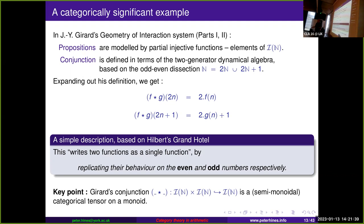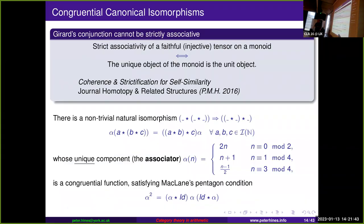There's something we need to take into consideration: we can't have a strictly associative tensor on a monoid, at least not without forcing it to collapse to the endomorphism monoid of a unit object, which would force the monoid to be abelian and the tensor to coincide with composition. So there must be a non-trivial natural isomorphism accounting for associativity. The unique components of a natural isomorphism between a three-fold right-bracketing and a three-fold left-bracketing with Girard's conjunction give us — just from the definition — a congruential function defined in a piecewise linear manner on modular classes.